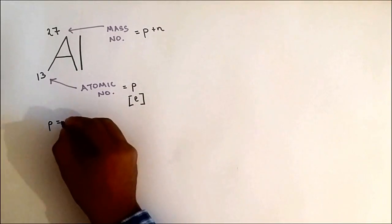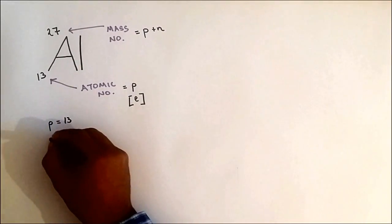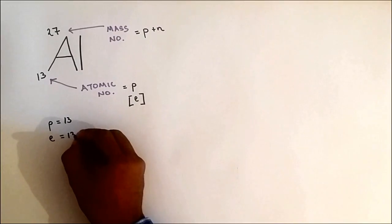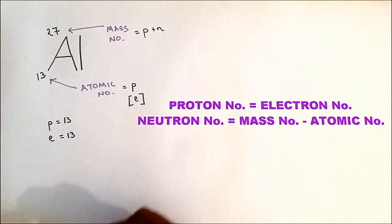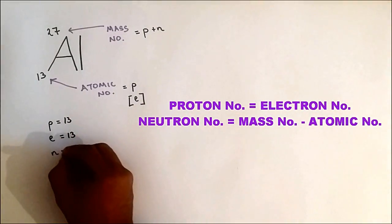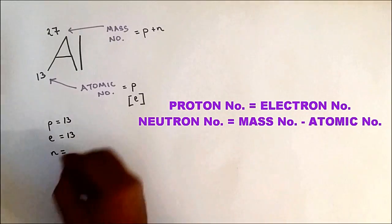So proton number is 13, electron number is 13, as the number of protons and electrons are equal, and the number of neutrons is 14.